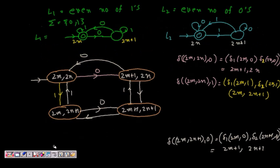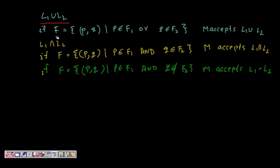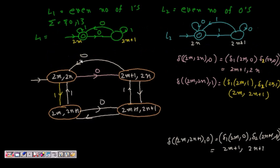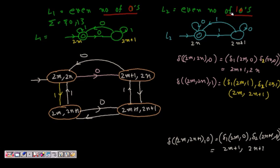Let's work through a concrete example to understand how to find L1 union L2, L1 intersection L2, and L1 minus L2. Our alphabet sigma = {0, 1}. L1 is the language containing strings with an even number of ones, and L2 is the language containing strings with an even number of zeros. The states for L1 represent the number of ones seen — either 2m (even) or 2m+1 (odd).